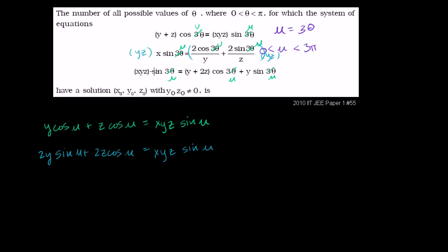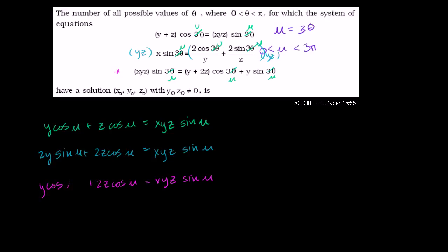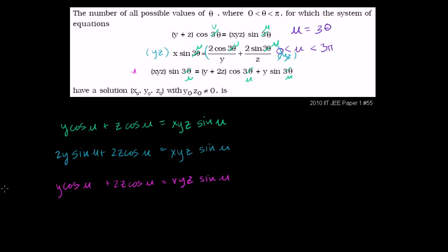Now they don't look that different. For the third equation, xyz sine of u equals — distributing cosine of u — 2z cosine of u plus y cosine of u plus y sine of u. So I've rewritten all three equations and the problem looks a lot less daunting.